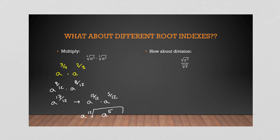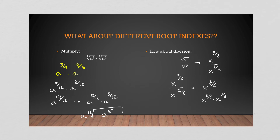Now for division — a similar step. We still need to convert to exponents. Here we have x to the three over two divided by x to the one over three. The common denominator is six, so x to the nine over six divided by x to the two over six. We subtract our exponents to get x to the seven over six, which breaks up into x to the six over six times x to the one over six. The six over six part comes out of the radical, and the one over six stays inside our sixth root. The fractions really help you identify what comes out of the root.